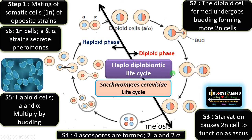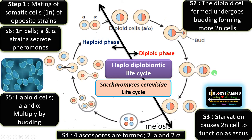That is why the life cycle is called the haplodiplobiontic life cycle. Let me summarize. In the case of Saccharomyces cerevisiae or baker's yeast, there are two haploid mating types, A and alpha. These mating types come in contact under the influence of pheromones, forming the diploid cell. This diploid cell undergoes budding and starts the diploid yeast phase, forming many diploid cells.